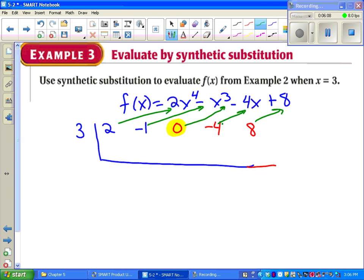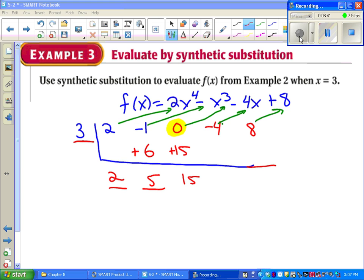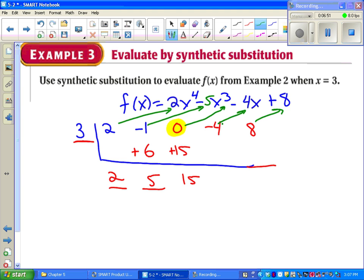Our next step for synthetic substitution is to drop down that first number on the inside. Drop down the 2. Then we say, what's 3 times 2? 3 times 2 is 6. Now we say, what's negative 1 plus 6? 5. Now we go 3 times 5. 15. 0 plus 15. 15. 3 times 15. And I caught myself on a mistake. See if you can find it before I erase it. There was supposed to be a negative 5 here, not a negative 1. That changes things up a little bit. Instead of a negative 1 in the original problem, we've got to put a negative 5. I apologize for being human.